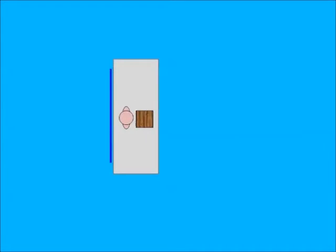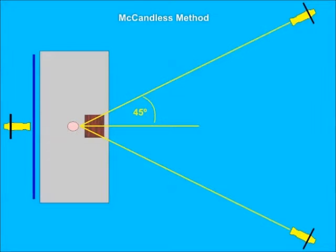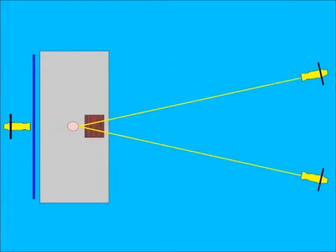Basic three-point stage lighting includes key, fill, and backlight. While the textbook example has the key and fill lights 45 degrees off axis from the lectern, most portable setups will need adjustment based on physical space.